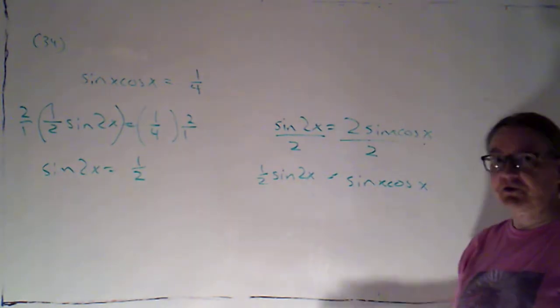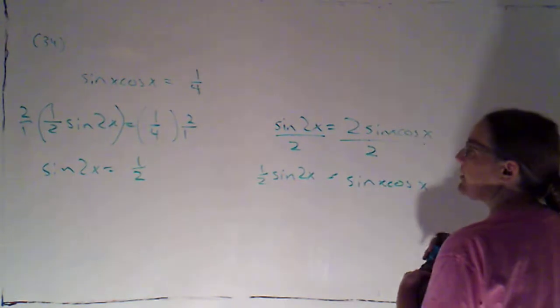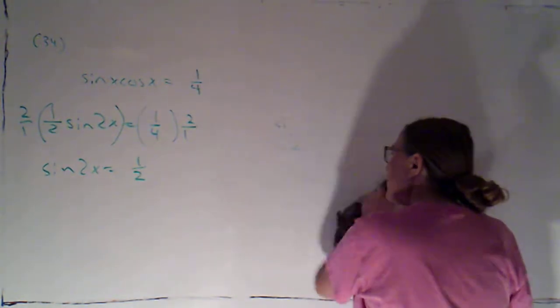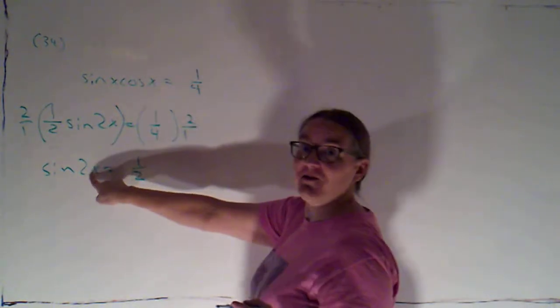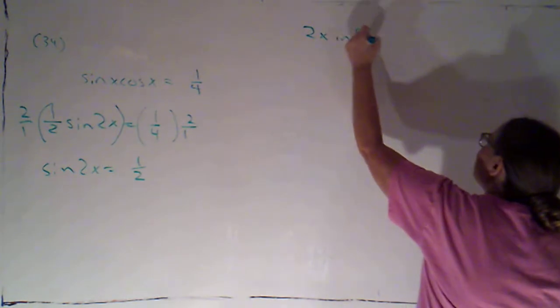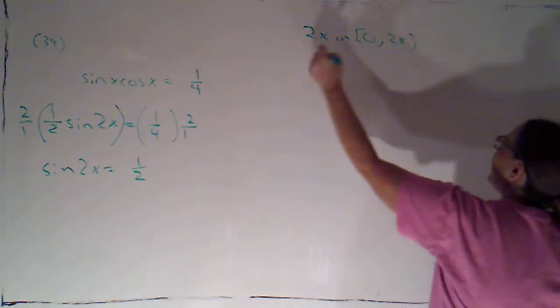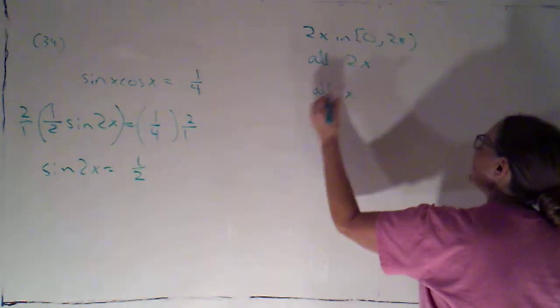Now, I'm going with the usual directions here. I want to find all x between zero and two-pi. And I want to find all x. But now, even though I started with x as my angle, I've now got 2x. So I'm going to go through finding 2x between zero and two-pi. Then I'll find all 2x. Then I'll find all x. And then I'll find x between zero and two-pi.